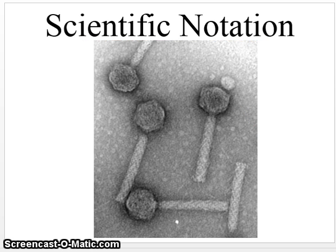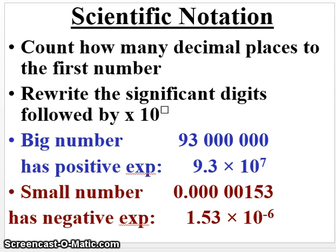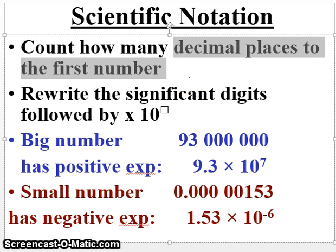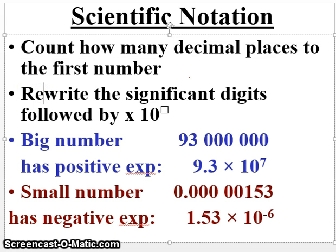So let's get the rules for scientific notation. What we do is essentially count how many numbers or decimal places we have to the first number. And then we rewrite the significant digits, just the significant digits, followed by times 10 to the something. This would be your power.